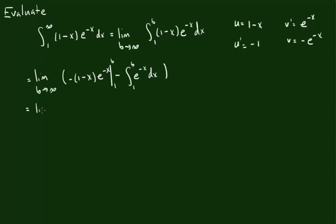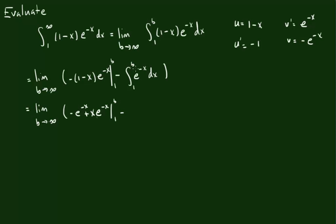We leave the limit in the front — we do not need it right now. Let's continue on with the integral. I'm going to multiply the e to the negative x through, so I've got negative e to the negative x and then plus x times e to the negative x. So we have negative e to the negative x plus x times e to the negative x, all evaluated from 1 to b. The antiderivative of e to the negative x is negative e to the negative x, so this gives us plus e to the negative x, also evaluated from 1 to b.